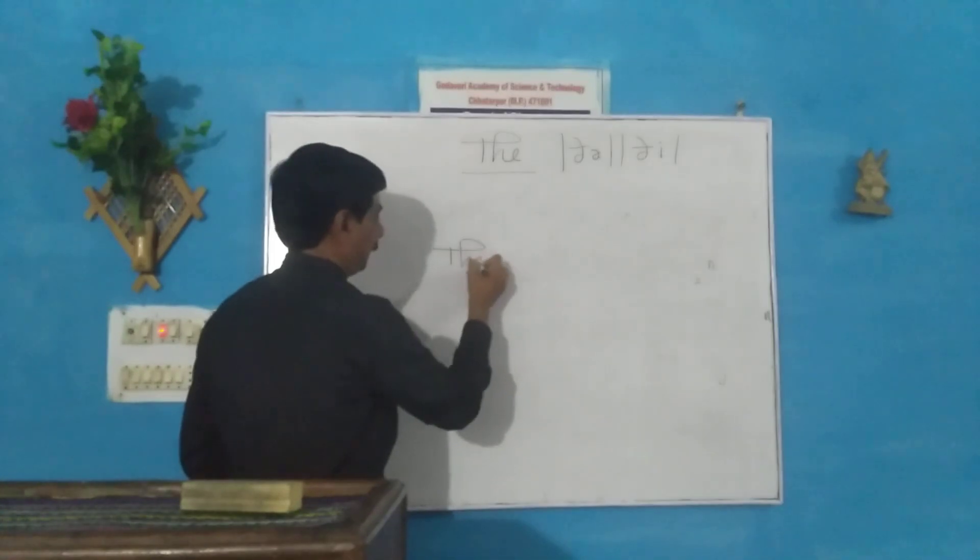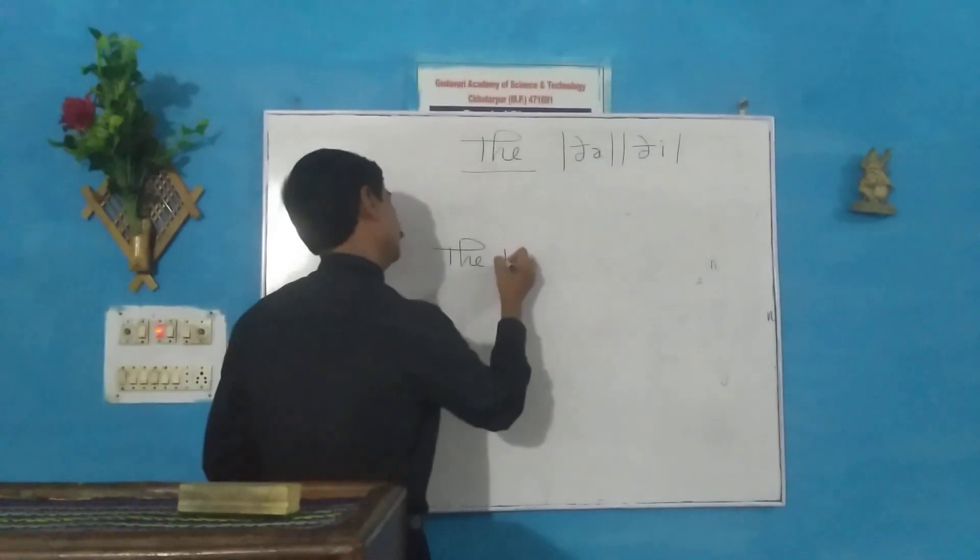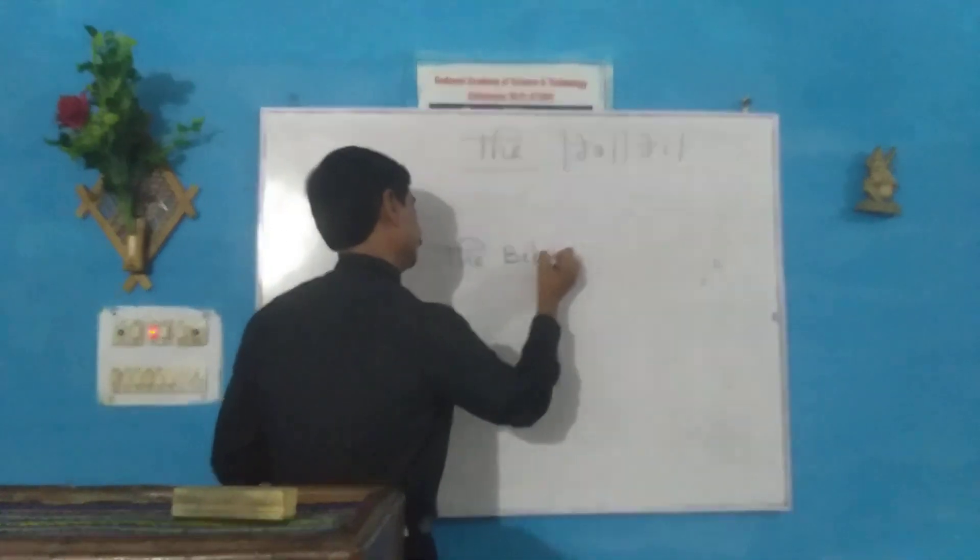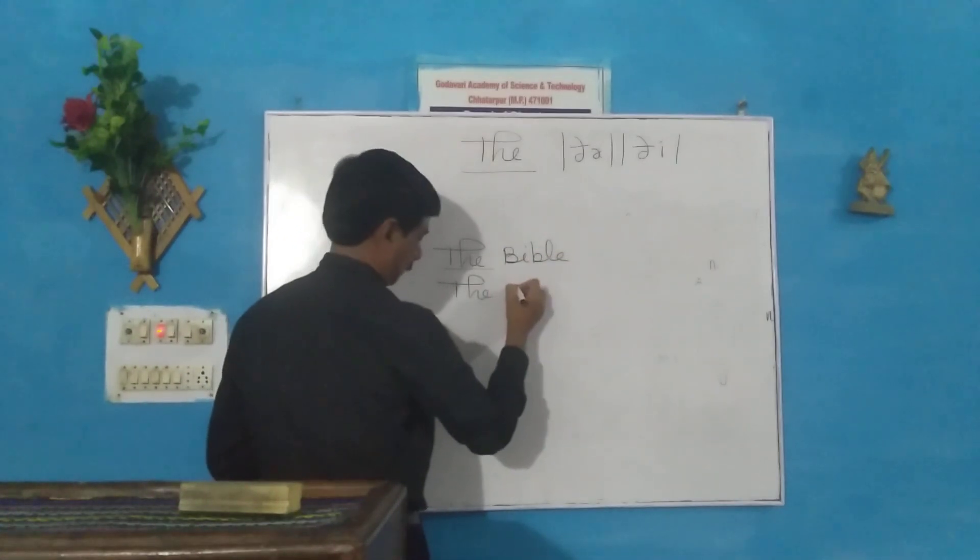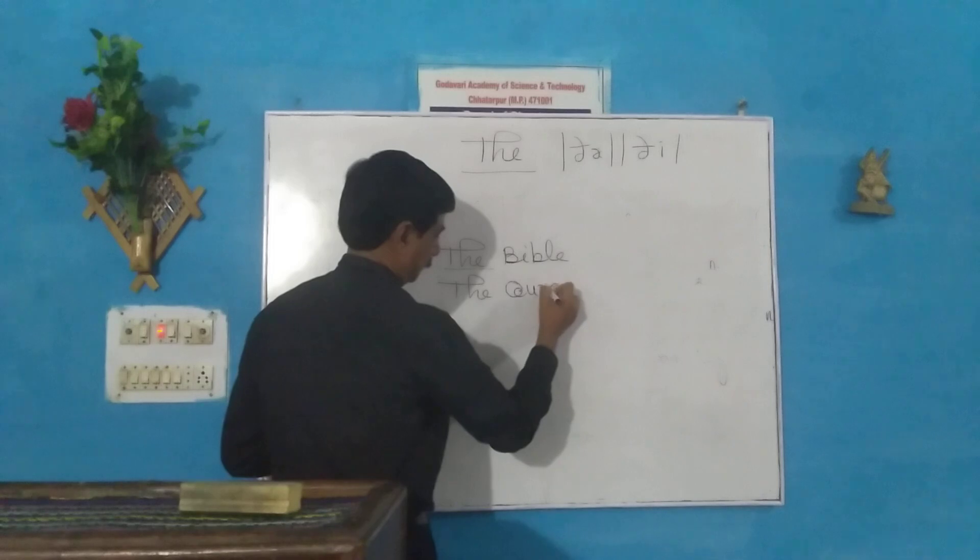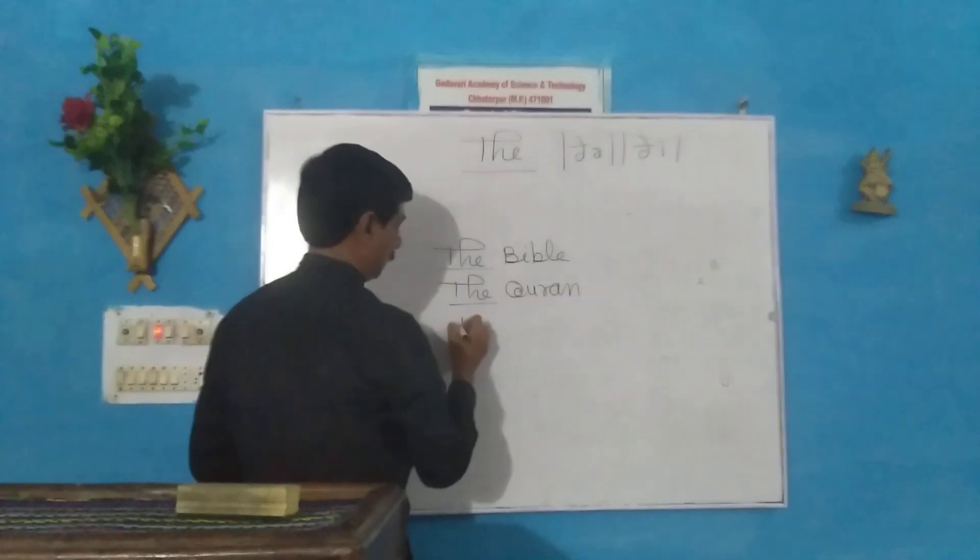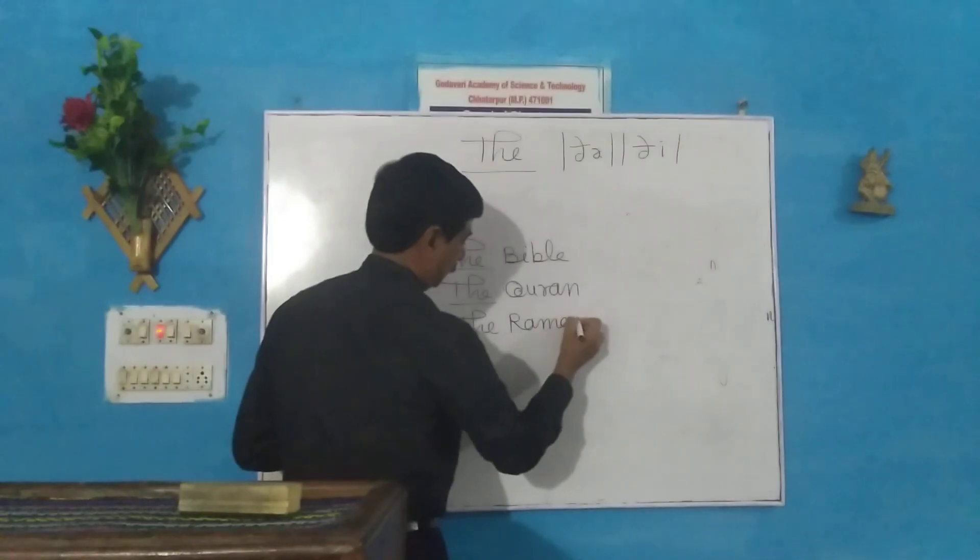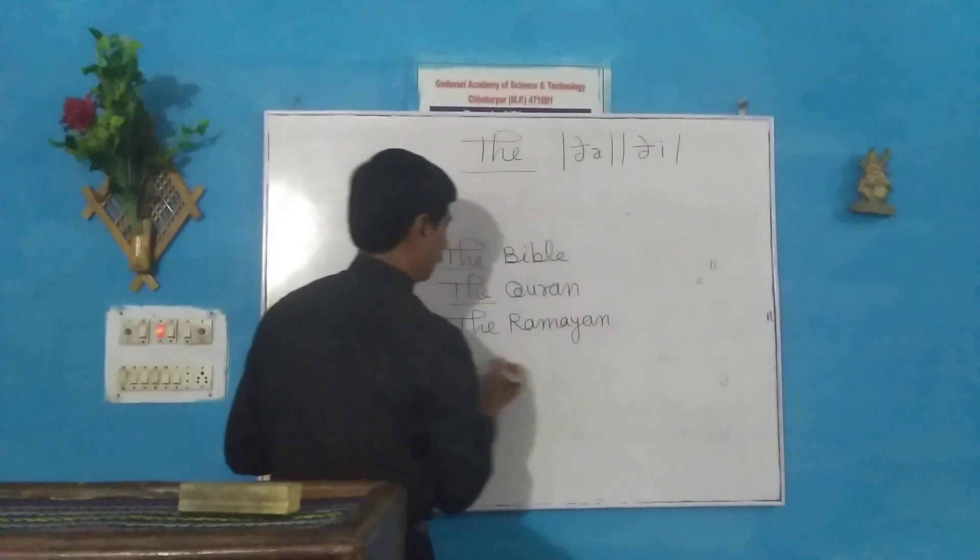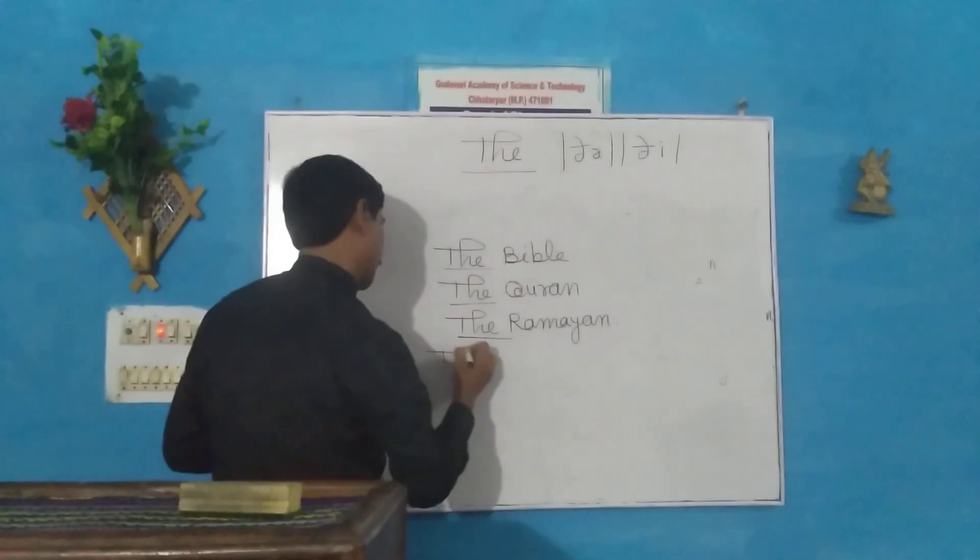The Bible, the Quran, the Ramayan. John Milton has written two great epics: the Paradise Lost and Paradise Regained.